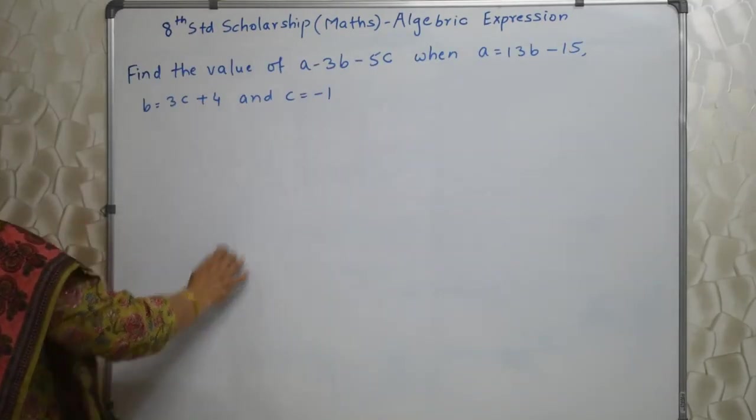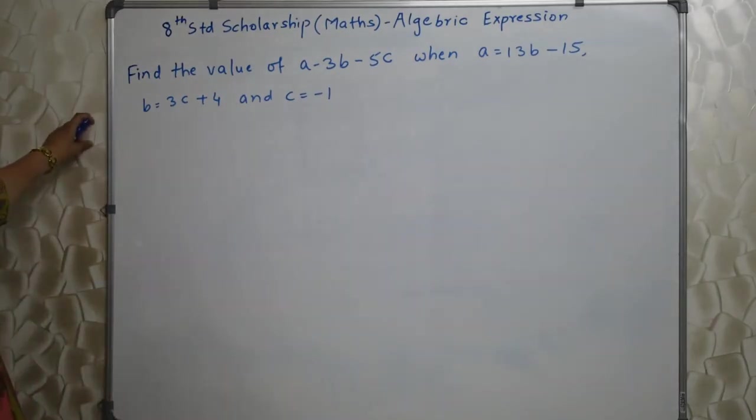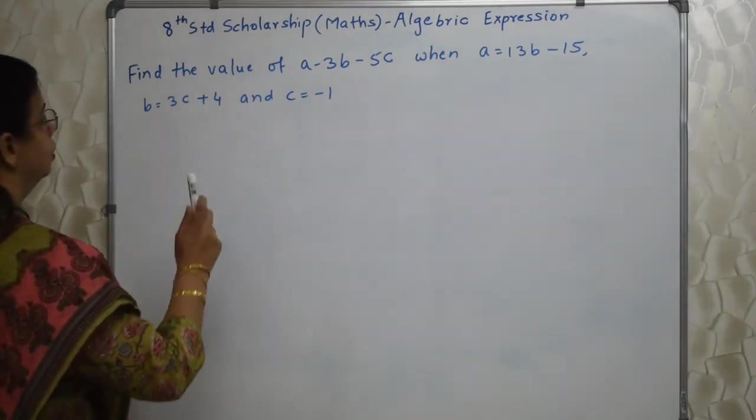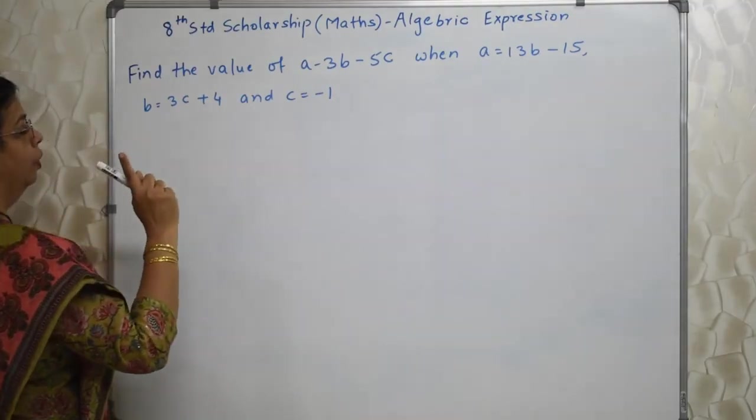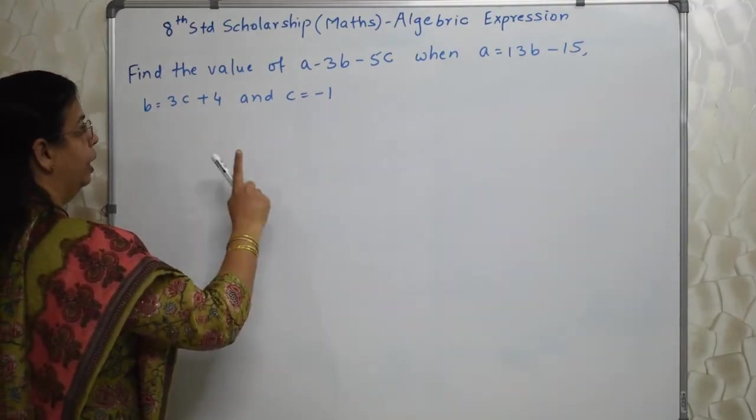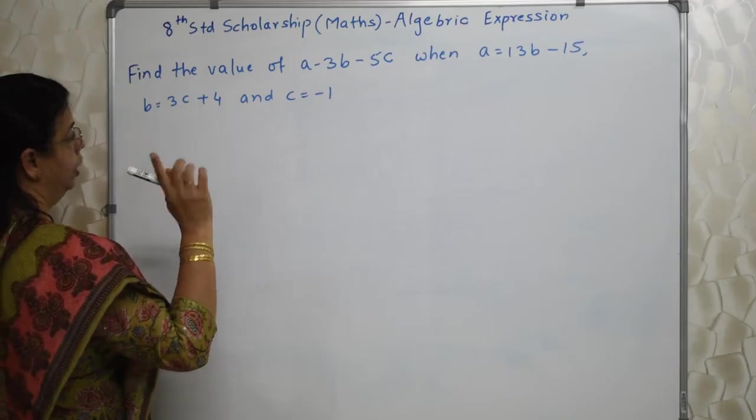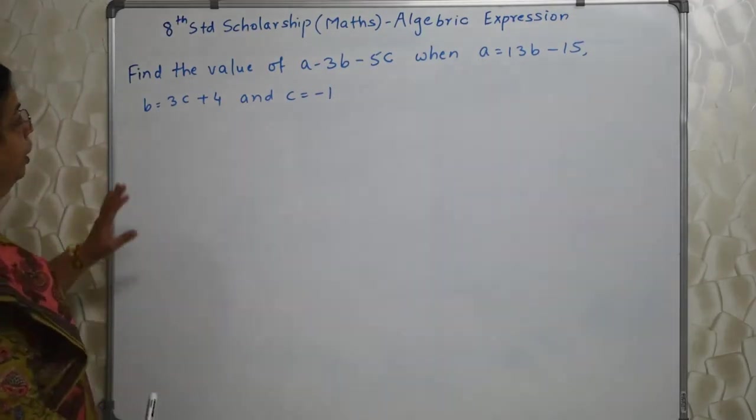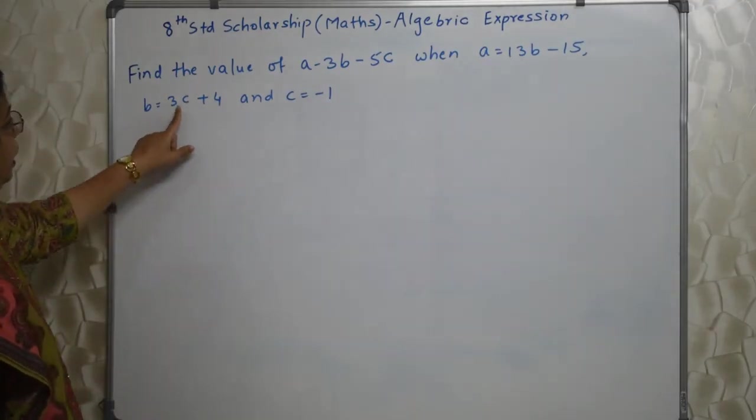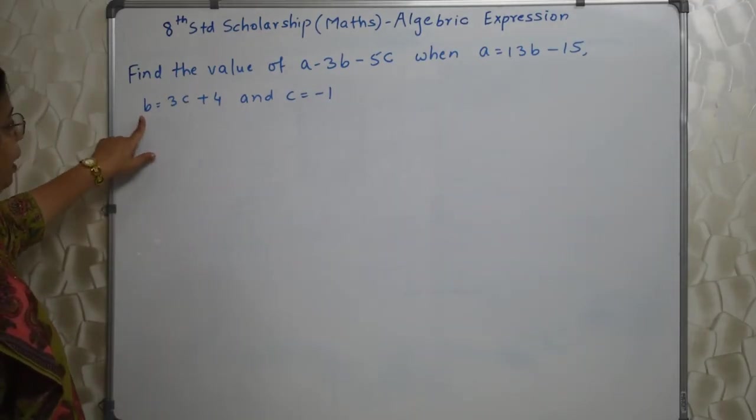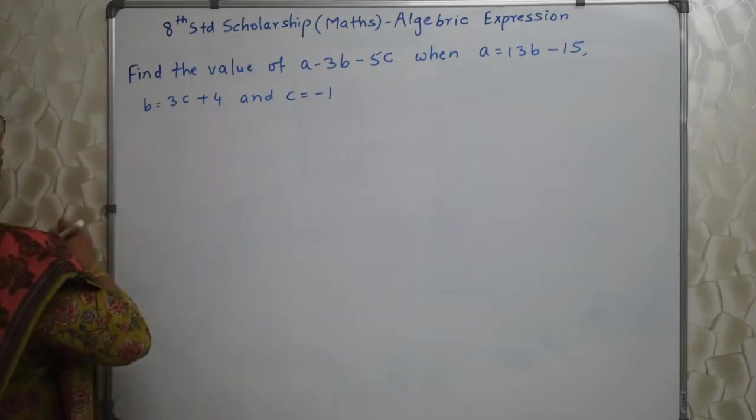Students see the next sum. Find the value of a minus 3b minus 5c when a is equal to 13b minus 15, b is equal to 3c plus 4 and c is equal to minus 1. See students here there are three variables a, b and c. Out of that one variable's value will be given to you. Now here in this case c is equal to minus 1 is given to you. Now you need to find out which variable is dependent on c. Here b is given in terms of c. So we can find out b with the help of c. So let's do it.